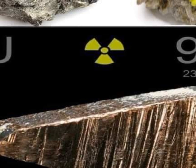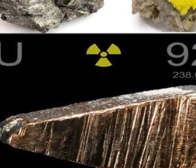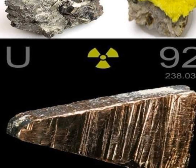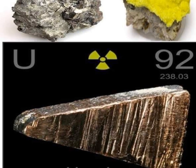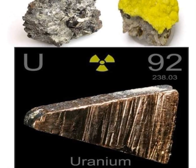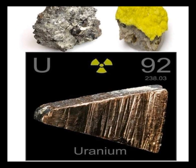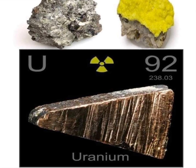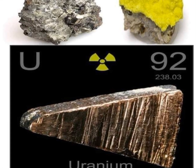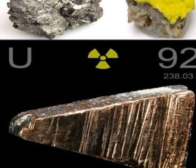Its melting point is 1135 degrees Celsius, and its boiling point is 4130 degrees Celsius. It is a soft and malleable metal, and it oxidizes quickly when exposed to air. It is characterized by the large number of its atoms, which enables it to divide more than other elements — the heaviest element found in nature. Pure uranium reacts with most non-metallic elements.